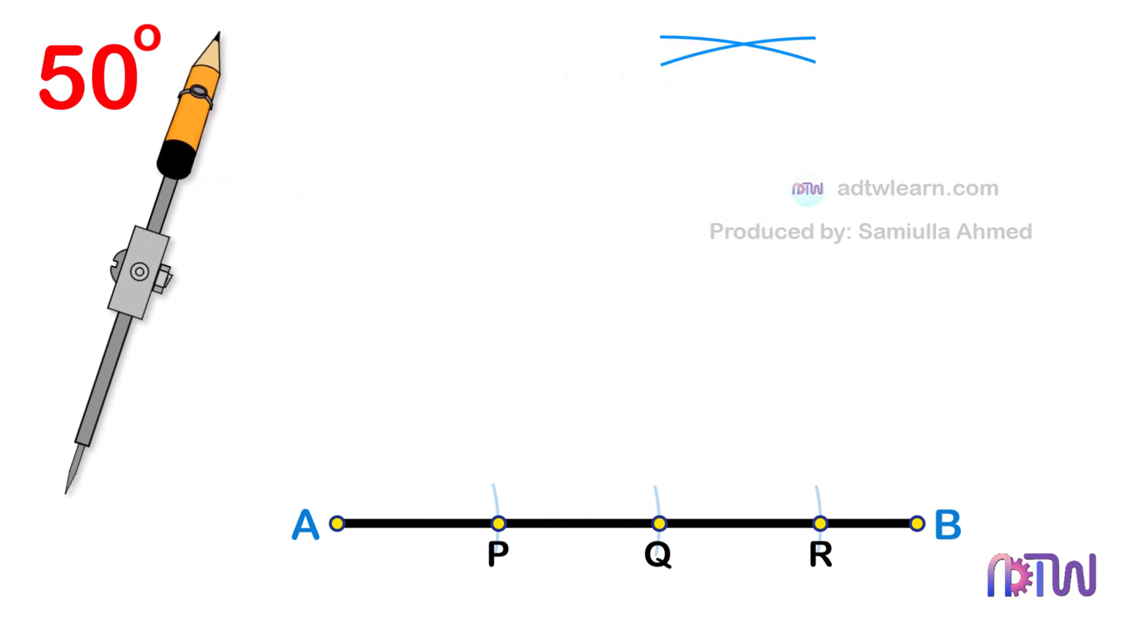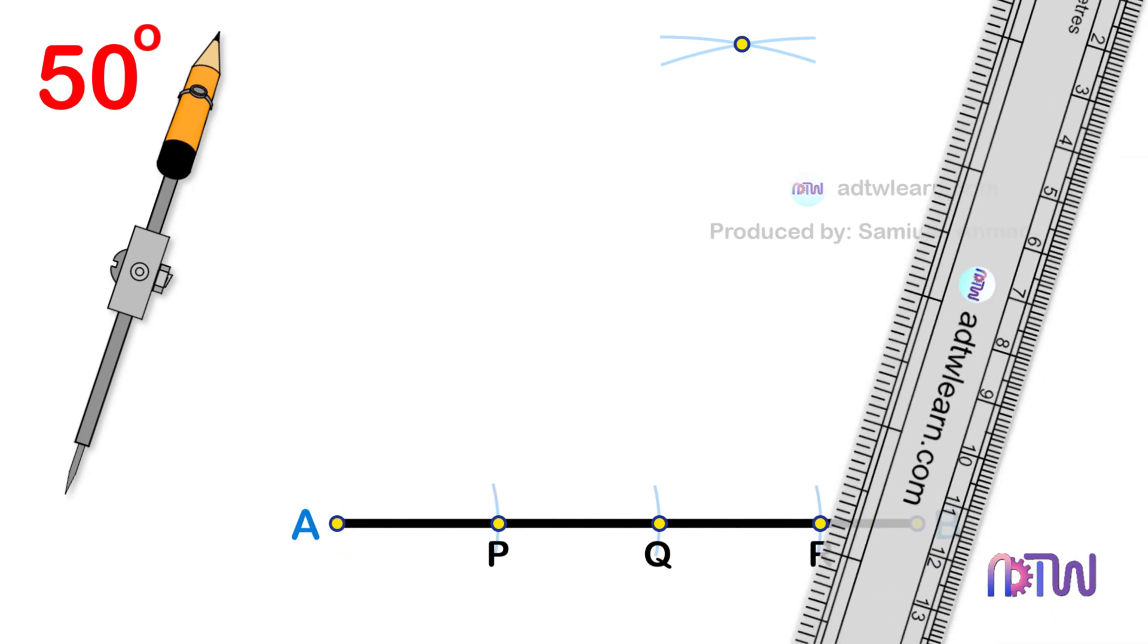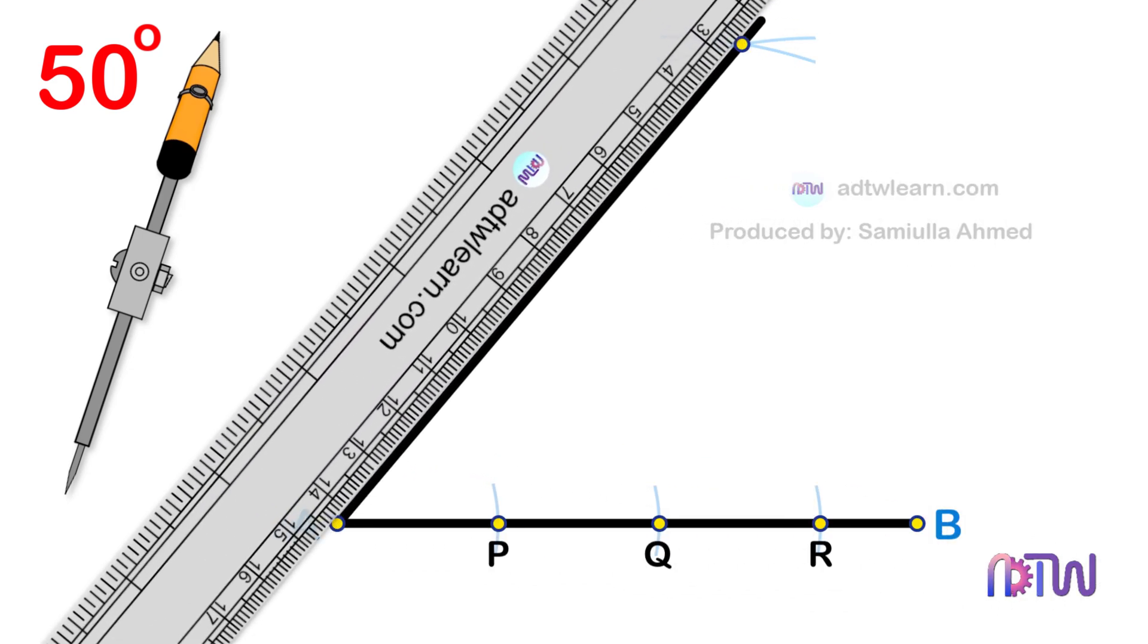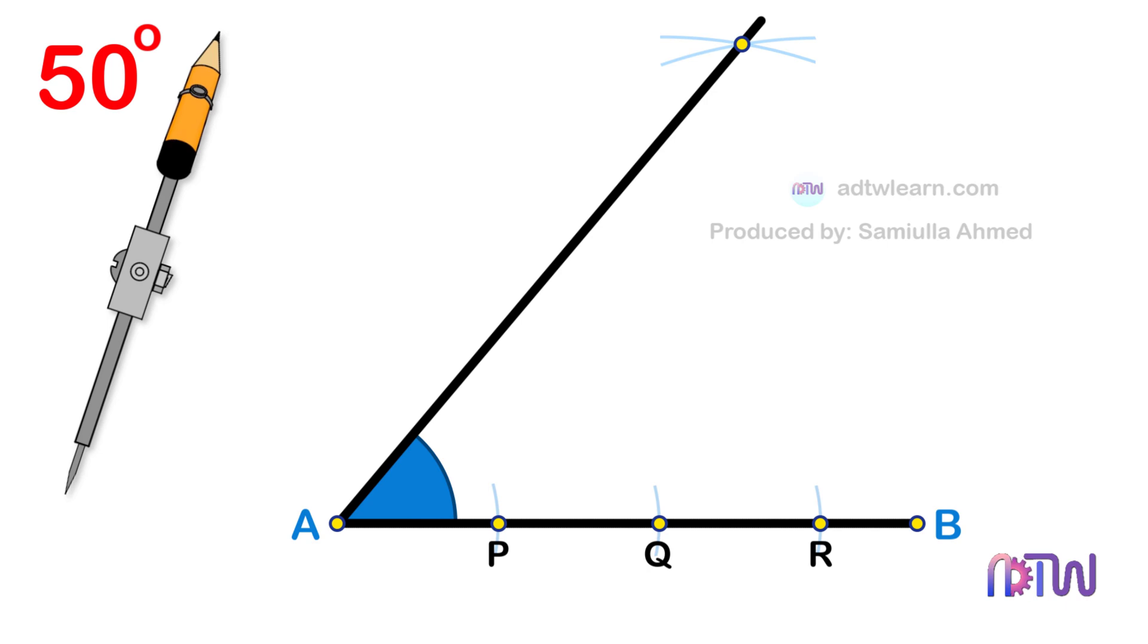Finally, draw a line passing through this intersection point from endpoint A of the line segment. The angle made by this line is 50 degrees from the horizontal. You can cross-check by using a protractor.